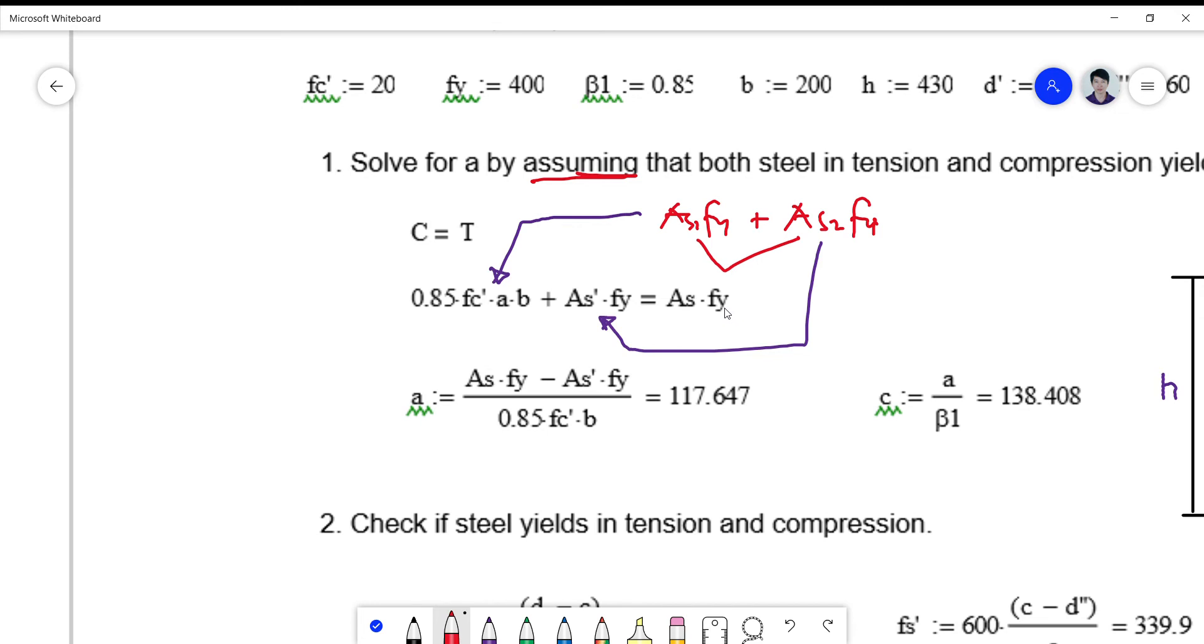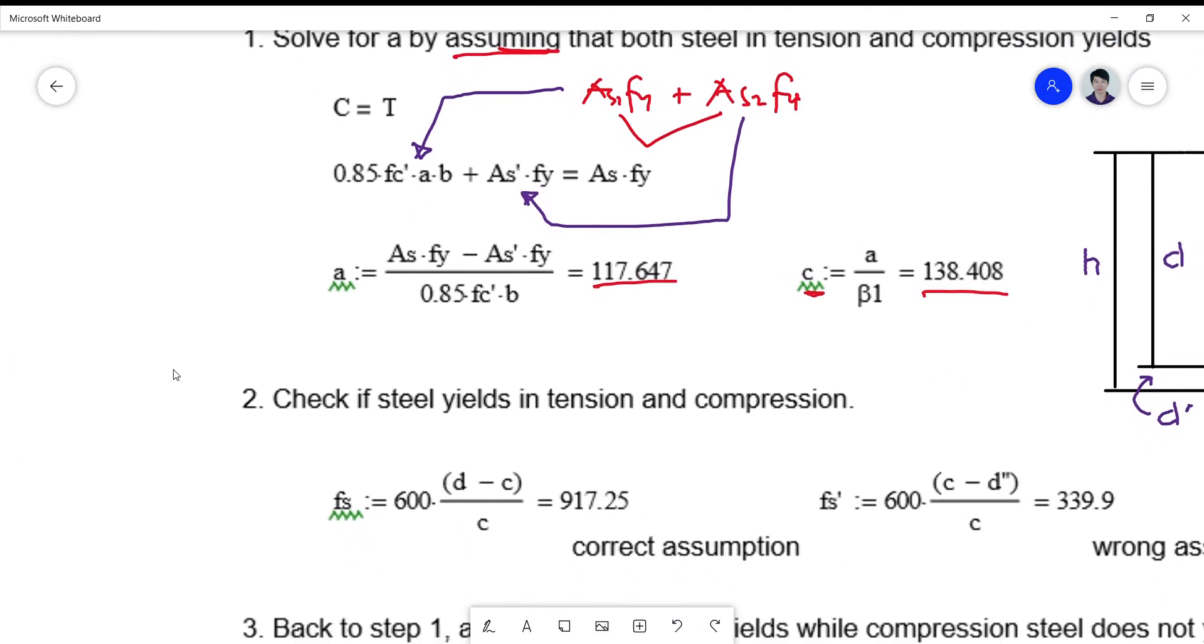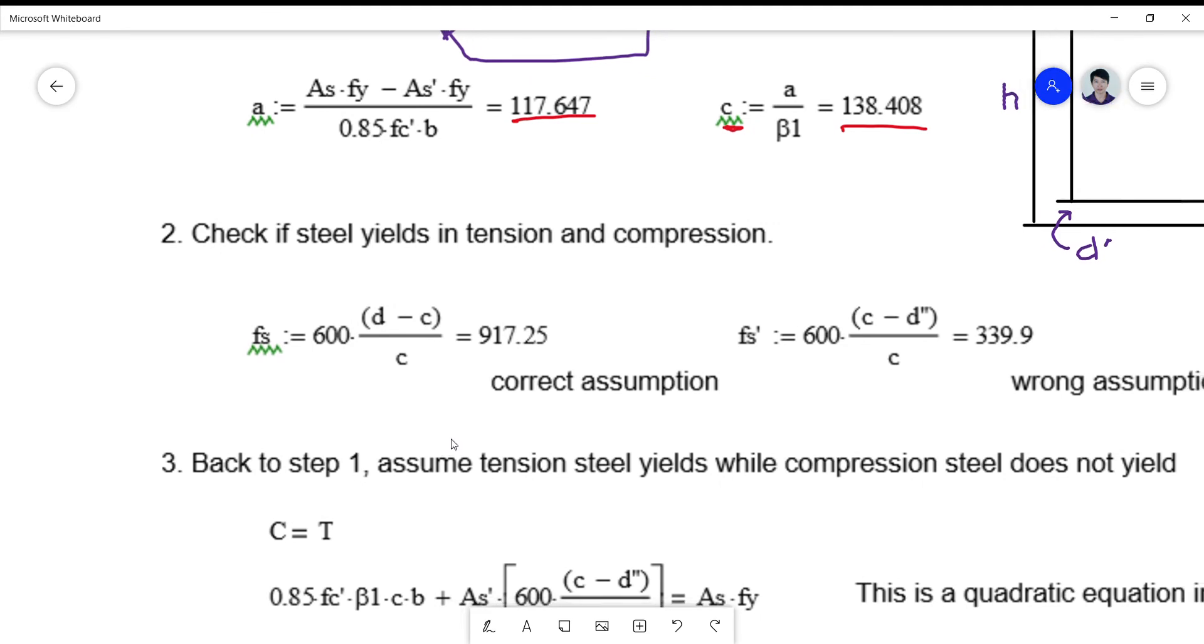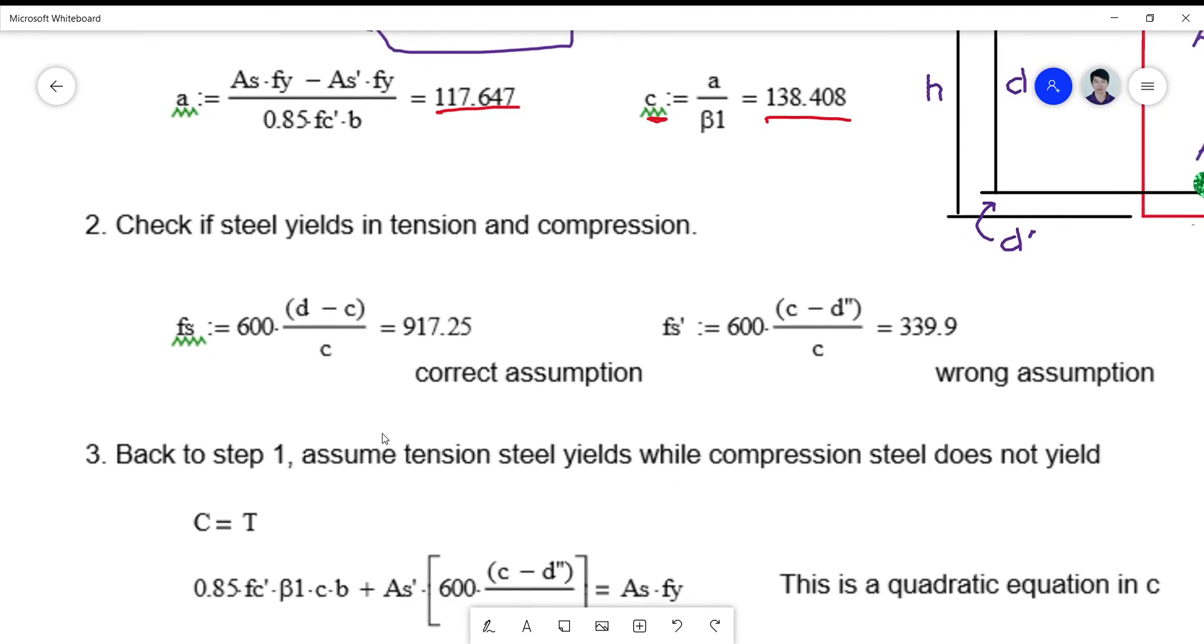We can now solve for the depth of the stress block simply on the basis of the assumption given that both steels have yielded to FY. This is only an assumption so we have to check it later. This becomes now transpose it on the right: negative AS prime·FY and then divided by 0.85·FC prime·B. You get A equals 117.647. For your C you just get A over beta 1, you get 138.408.